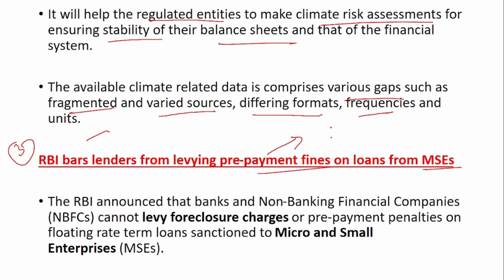Suppose you have extra money and you pay an amount more than the EMI. For example, your EMI is Rs. 25,000 but you have Rs. 1 lakh in your pocket. You try to pay this extra Rs. 1 lakh so that your interest reduces. You pay this Rs. 1 lakh apart from your EMI — this is called prepayment. For a few loans, if you make a prepayment, there will be a fine; for a few others, there will not be a fine.